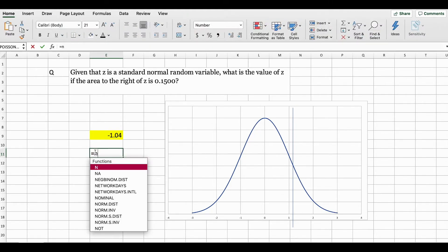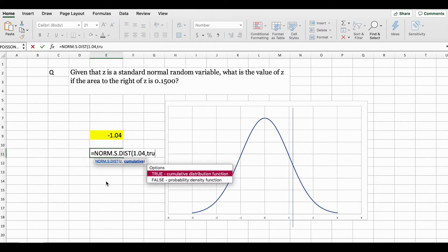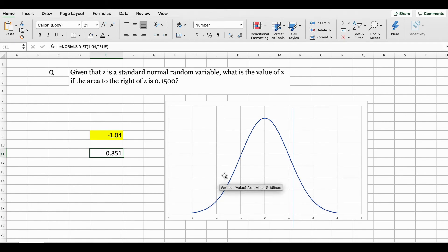You can check this using the NORM.S.DIST function. Here the first argument is going to ask you for the z value. We're going to put positive 1.04 and we're using the true statement. So at this point, 0.8485 tells us the area on the left side of 1.04. Now since the area under the curve is equal to 1, we deduct this from 1 and you will find that this is indeed equal to 0.1500.